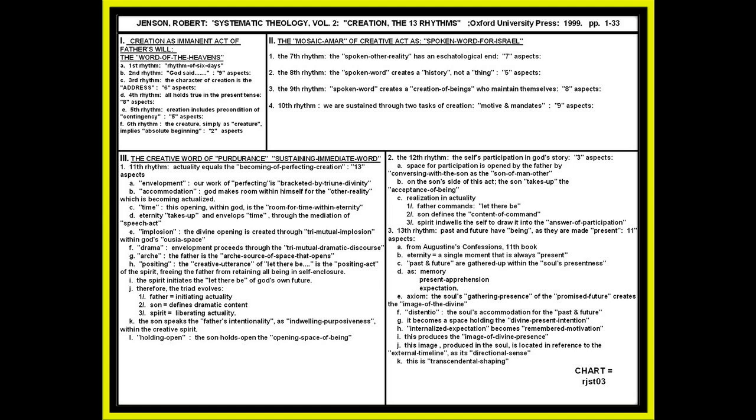So the thirteenth and final rhythm of creation is to understand that the past and the future have their being as they are made present through this participation. He borrows from Augustine's Confessions, the eleventh book, where eternity equals a single moment that is always present. Past and future are gathered up within the soul's presentness. And that gathering up within the soul is a gathering as memory, present apprehension, and eschatological expectation.